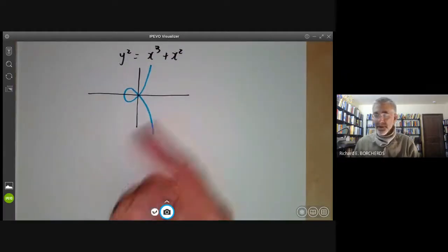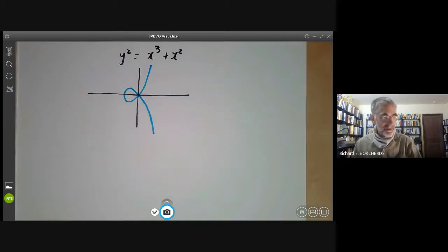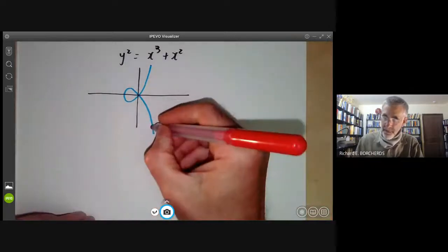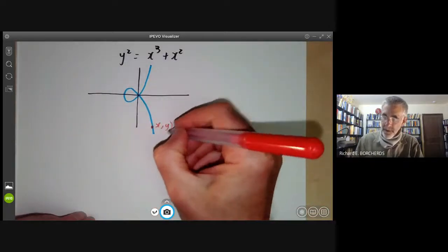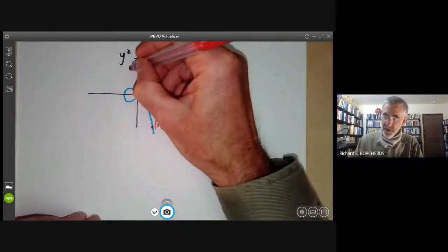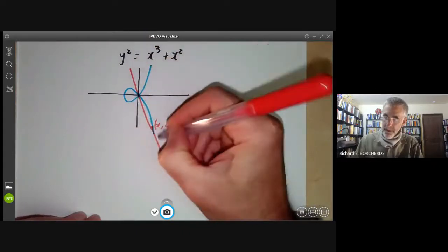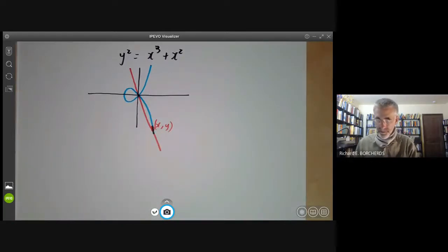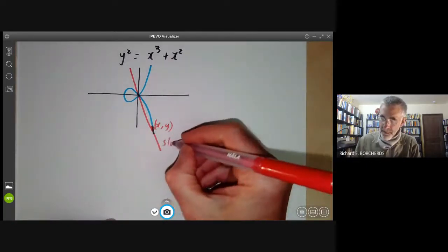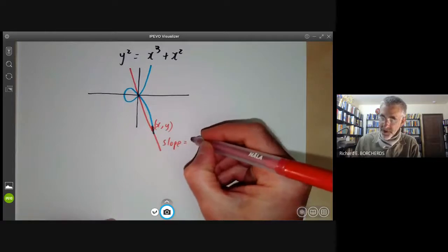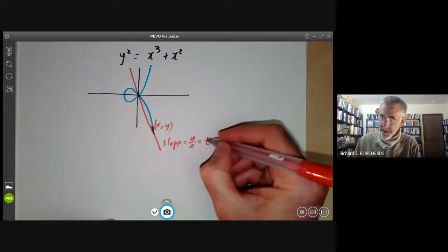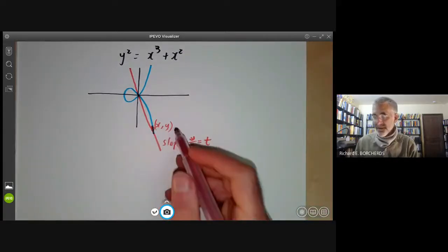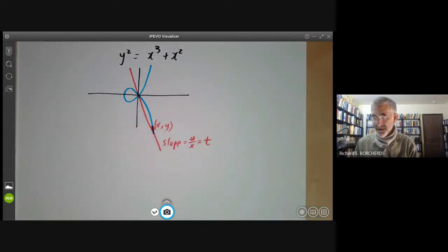And what we'd like to do is to find rational or integral points on the curve. Well, that's not very difficult. Suppose we've got a point x, y. What we do is we draw the line through this point and the origin and the slope of this line will, of course, just be y over x, which we will call t. And obviously, if x and y are rational, then t is also rational.